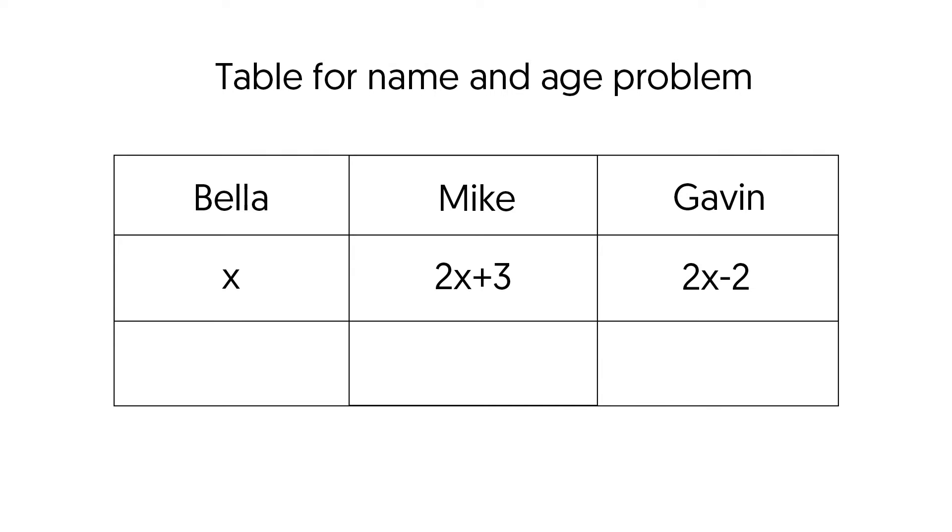Gavin is five years younger than Mike. So let's go ahead and use Mike's equation minus five, which is two x minus two. Now that we know that,